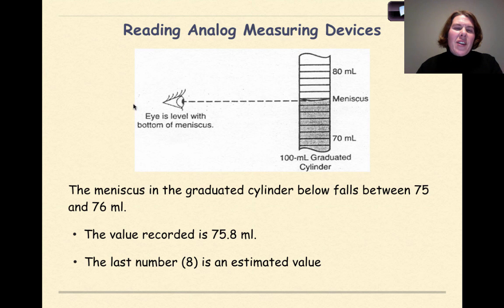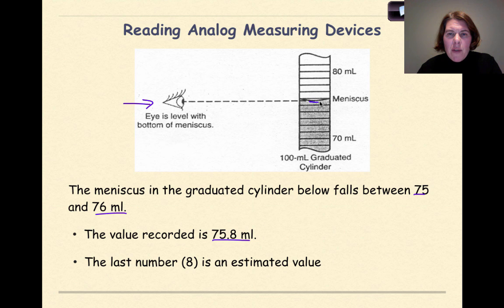Same thing goes when you're reading a graduated cylinder. Now one thing to point out here is this little awesome eye. Remember that the proper lab technique when you're reading a graduated cylinder is to get down at the level of the volume that you're measuring and look directly at the graduated cylinder. So that's why this says eye is leveled with the bottom of the meniscus. The meniscus in the graduated cylinder falls between 75 and 76 milliliters. Therefore, the value is recorded at 75.8 milliliters. When we measure these liquids, it's always measured from the bottom of the meniscus, and we know that looking at these markings right here.